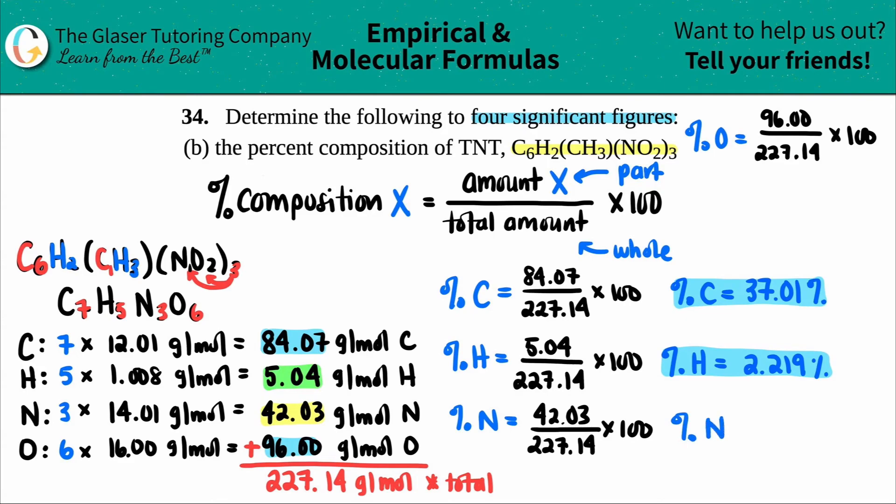Nitrogen, percent N equals 42.03, divided by 227.14, times 100.